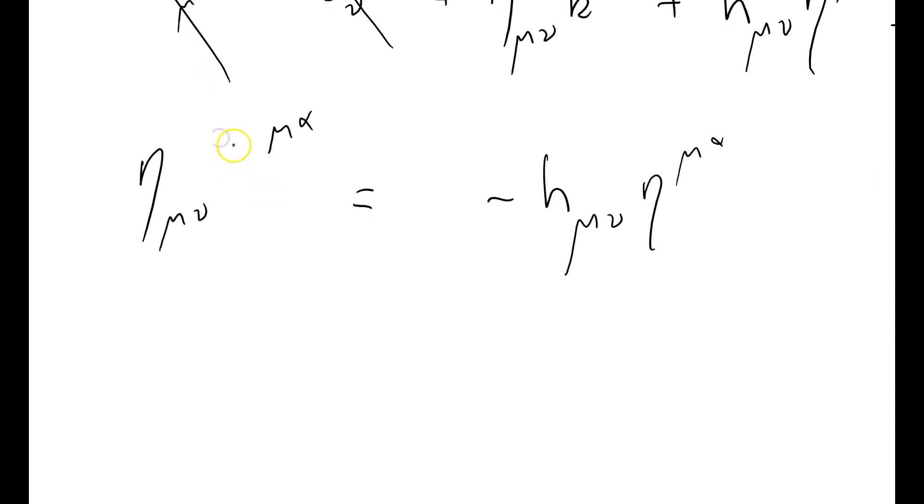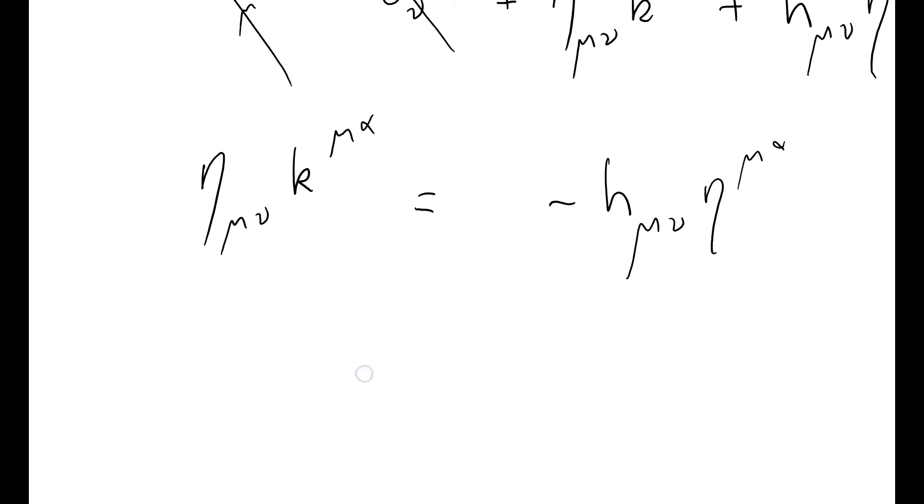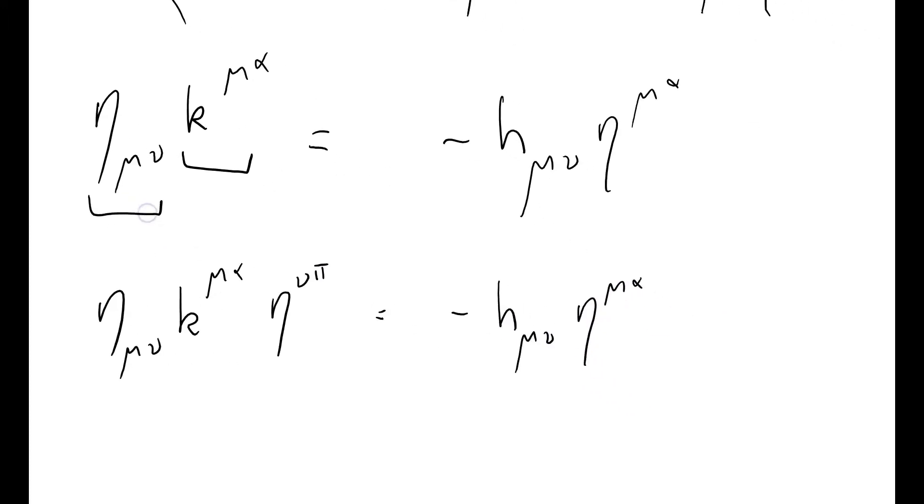I've got eta mu nu K mu alpha, copying this term here, equals minus H mu nu eta mu alpha. Let me pinch in a little bit on that. OK, and I want to know what my K is. Well, I've got this K here, but it's multiplied by this Minkowski metric here. So what I want to do is to kill that, so I'm going to multiply both sides of this equation, eta mu nu K mu alpha, by another Minkowski metric.